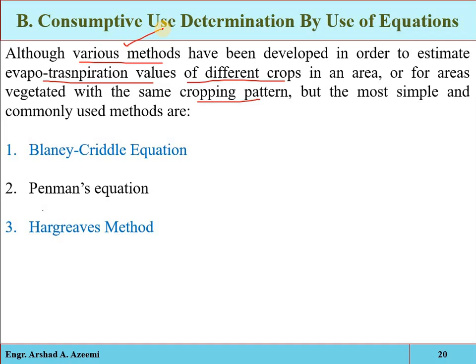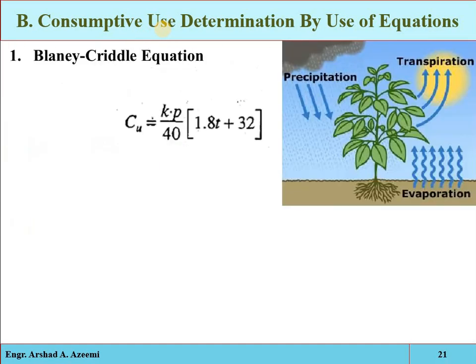We have already discussed the direct experimental methods. Now, if sufficient climatological or meteorological data is available, we can utilize these equations to determine the consumptive use of a specific area more quickly. The first method is the Blaney-Criddle equation.